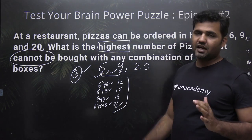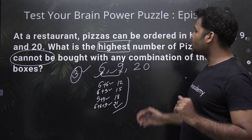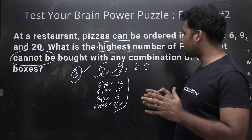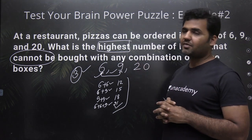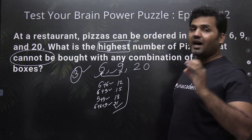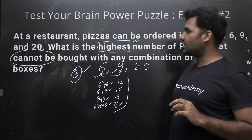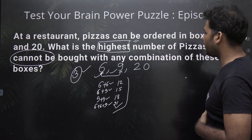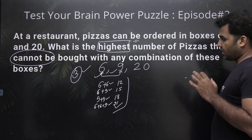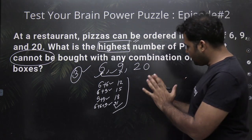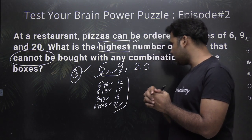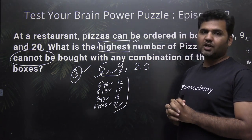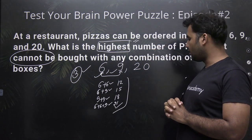So the answer is 3? No, 3 is not the answer. Why? Because we are not supposed to find out the lowest number — we are supposed to find out the highest number of pizzas that cannot be bought. That is the highest value we need to find out. Now, once you know that all multiples of 3 can be obtained with 6 and 9, what about other numbers which are not multiples of 3?